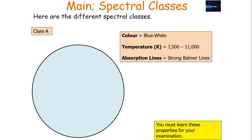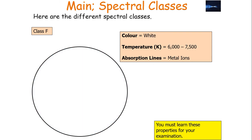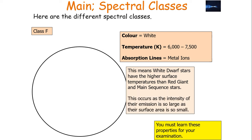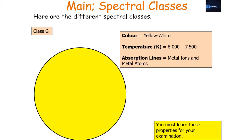Class A stars are blue-white in colour, with a temperature between 7,500 and 11,000 K. They have very strong Balmer lines because this temperature corresponds to many electrons in the atmospheric hydrogen being in the n=2 state. Class F stars are white and cooler, at 6,000 to 7,500 K, with absorption lines from metal ions since it's cool enough for ions to form. It's worth noting that white dwarf stars actually have a higher surface temperature than red giant and main sequence stars, as their emission intensity is so large because their surface area is so small.